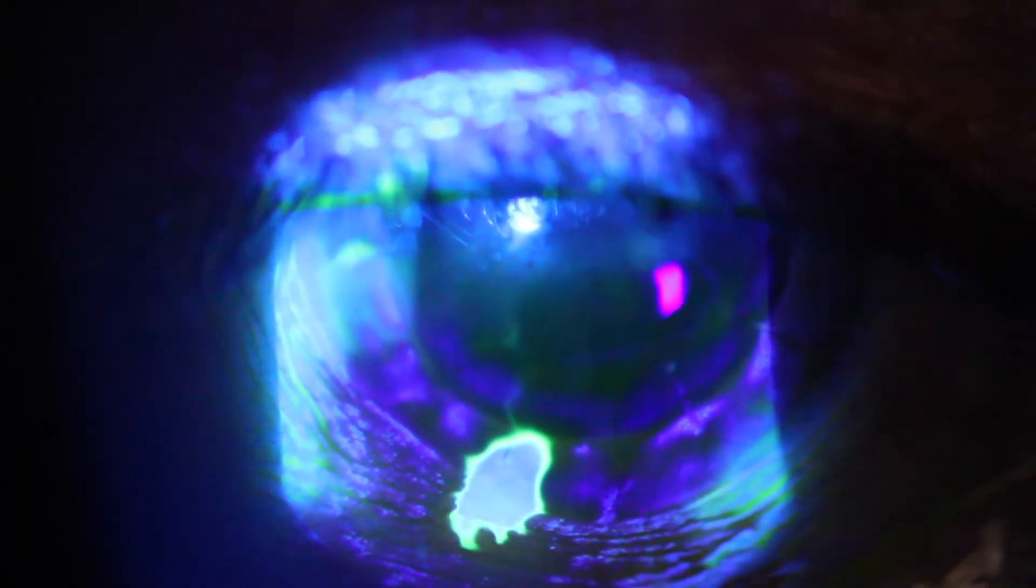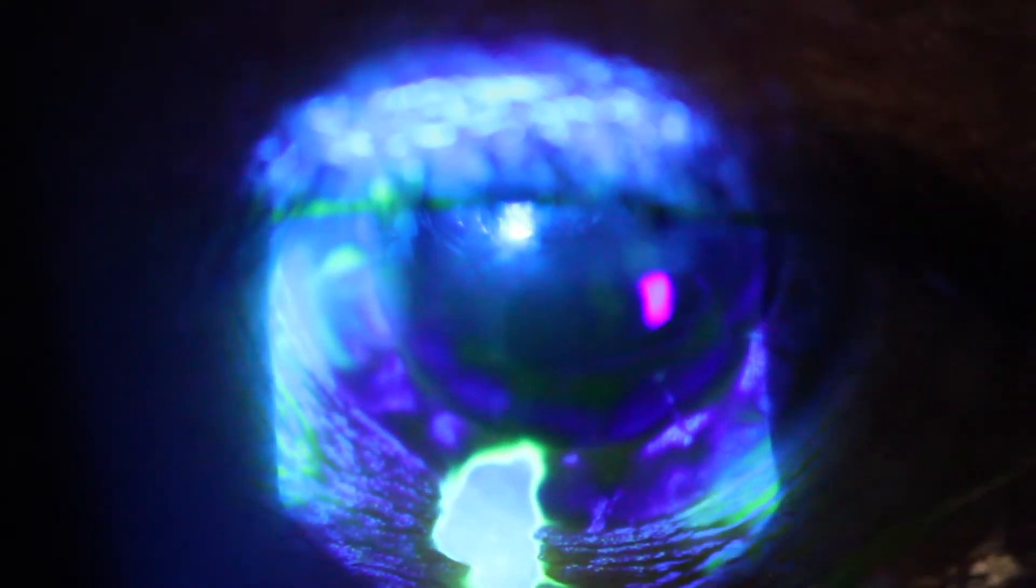You can see here I've instilled 2% fluorescein into the eye, the patient blinks, and aqueous is coming from the anterior chamber out of the corneal perforation, or in this case out of the junction between the patient's host cornea and the corneal graft, washing that fluorescein away.